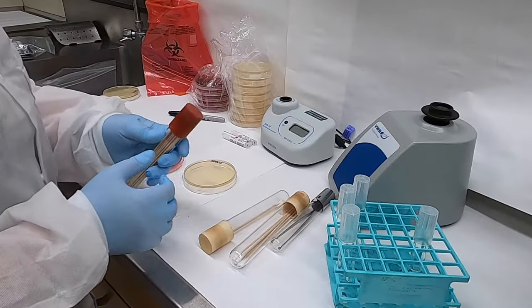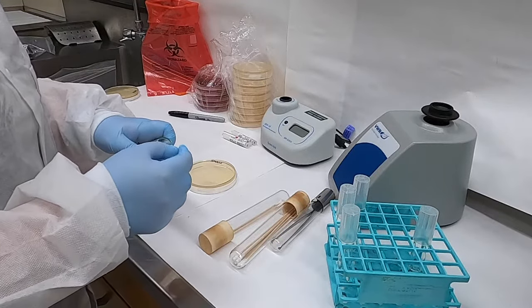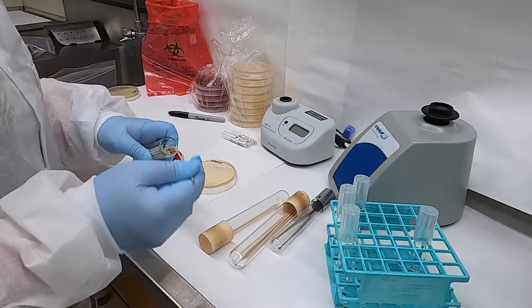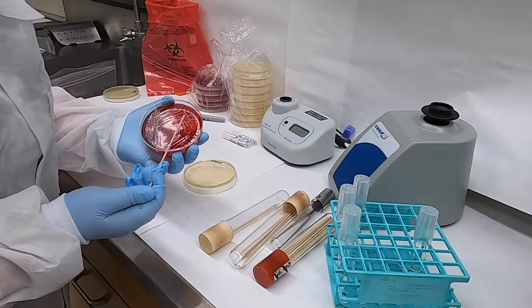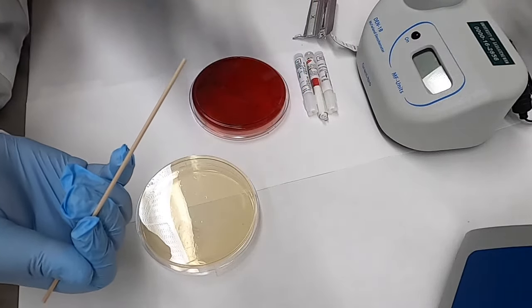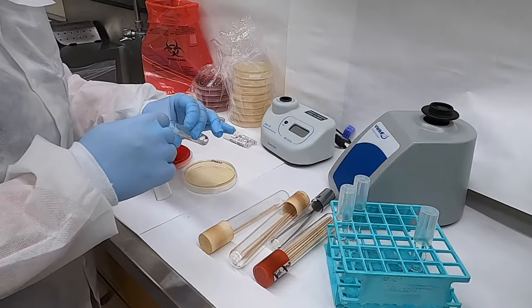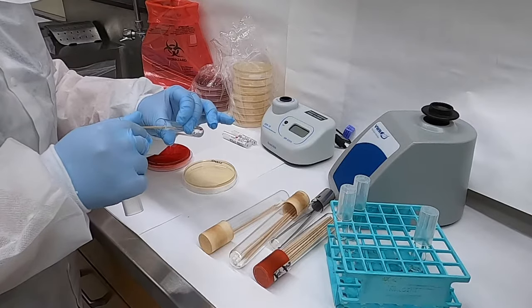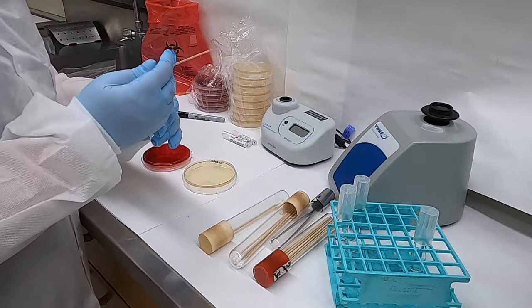The first step in performing a Kirby-Bauer disk diffusion test is to make a suspension of bacteria in liquid. So we start by taking a sterile stick or swab and picking several isolated colonies from our fresh overnight culture. Those colonies are then suspended in sterile water. You can see here we just rotate the stick along the side of the tube to try and get all of those bacteria off.